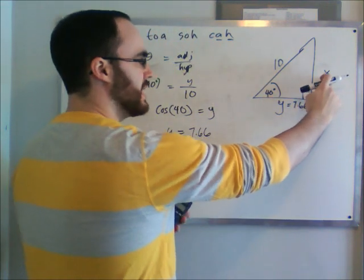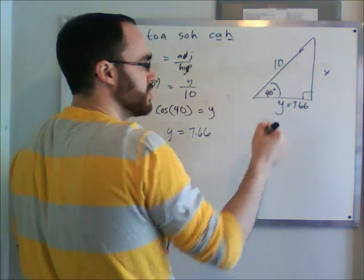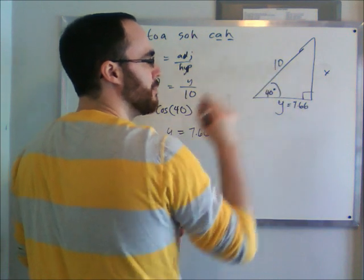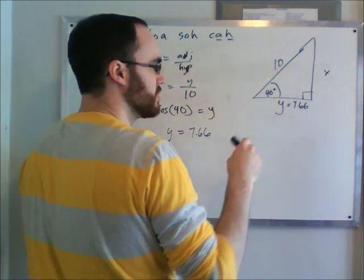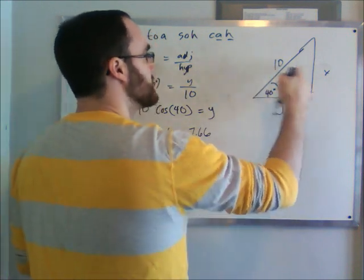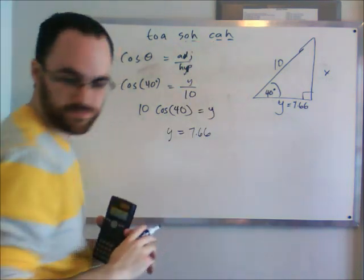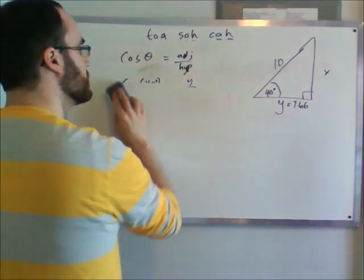We can then calculate what x is based on another ratio. So let's use the opposite and the hypotenuse. Opposite and hypotenuse is going to be our sine ratio.